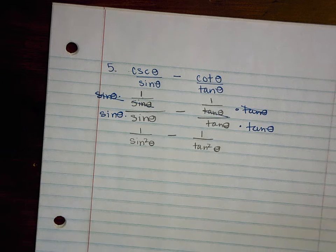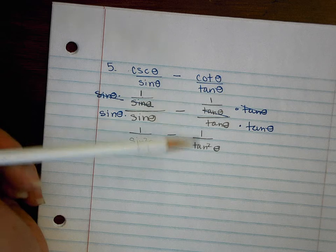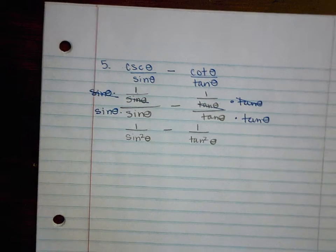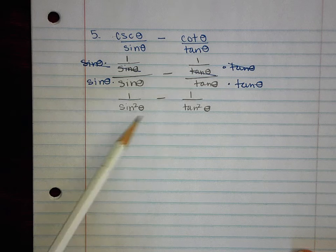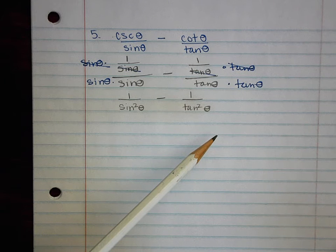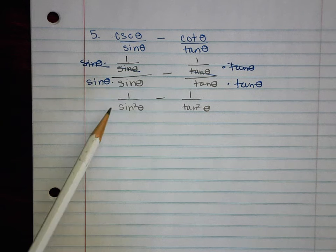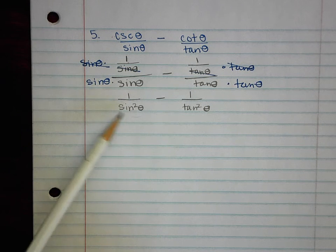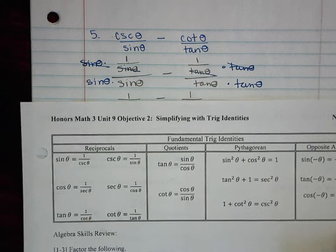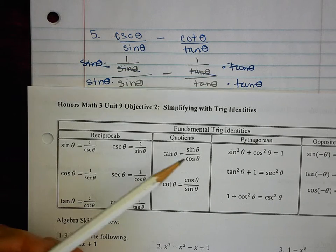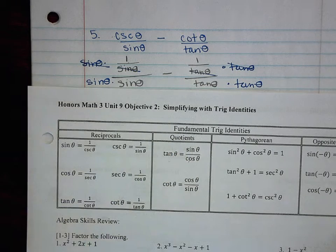I have a sine squared here and a tangent squared here. I can use an identity, or I can try to get a common denominator. I'm going to keep working with the identities because I know that tangent is sine over cosine, and I think that might be helpful given that this is a sine squared. So I'm going to use this quotient identity — tangent is the same as sine over cosine — and that's what I'm going to work with next.